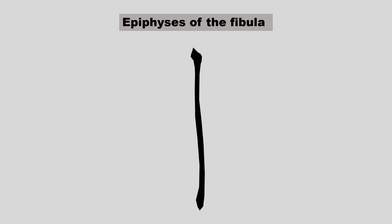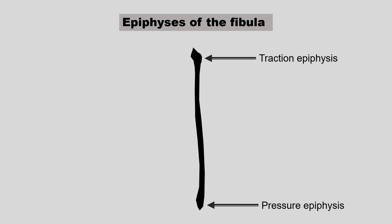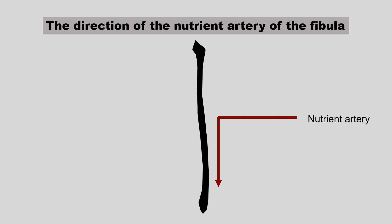The fibula is a long bone with two epiphyses on its two ends. The upper end is the traction epiphysis and the lower end is the pressure epiphysis. The traction epiphysis is formed by the pulling of the muscle — here the muscle is biceps femoris. The fibula does not transmit body weight in the standing position, but it transmits the weight of the foot when the foot is off the ground, transferring this weight through its lower end to the tibia. That is why the lower end is termed the pressure epiphysis.